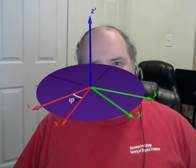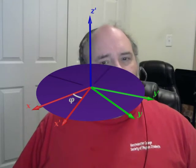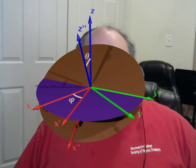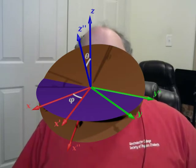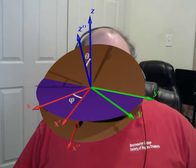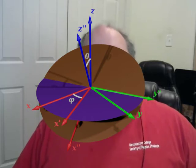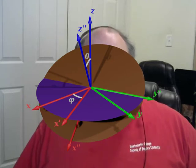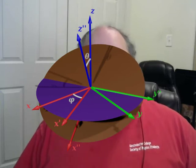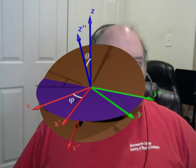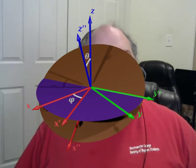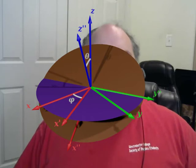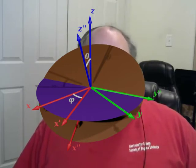Now we want to rotate by theta about the y-prime axis. You'll recognize that the z-double-prime axis — if you take the end of that vector and call it r — then theta and phi are exactly the theta and phi of spherical coordinates. If you start with a point on the z-axis and do the first two Euler rotations, you now have the spherical coordinates of that point. The x-double-prime axis is offset from x-prime, but y-double-prime and y-prime are the same since that's what we rotated around.